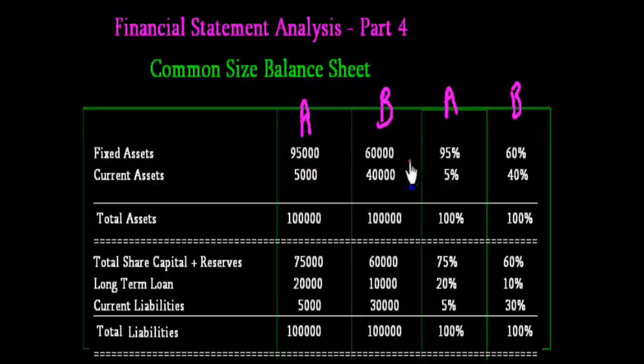In Company A, fixed assets are 95% but total share capital is 75%. It means the company is using its long-term loan and current liabilities for buying fixed assets.